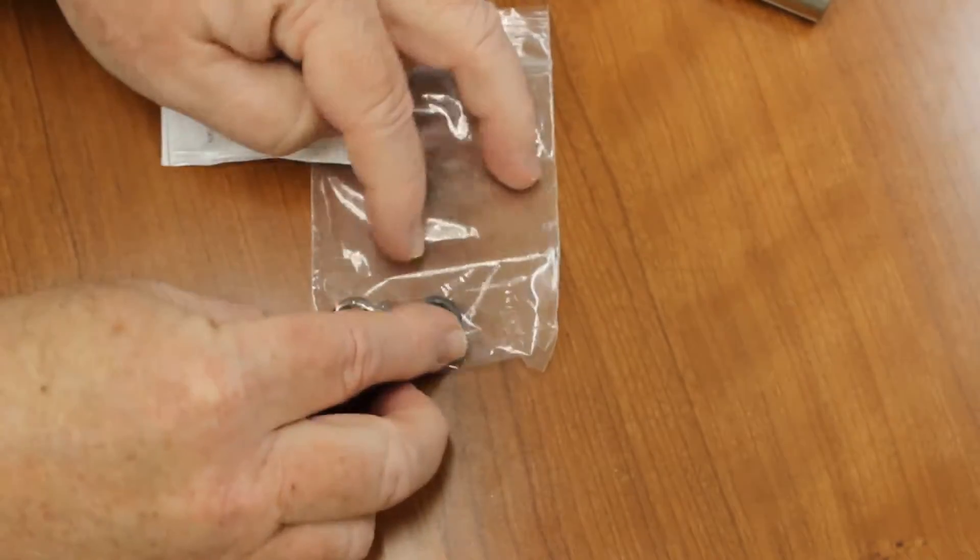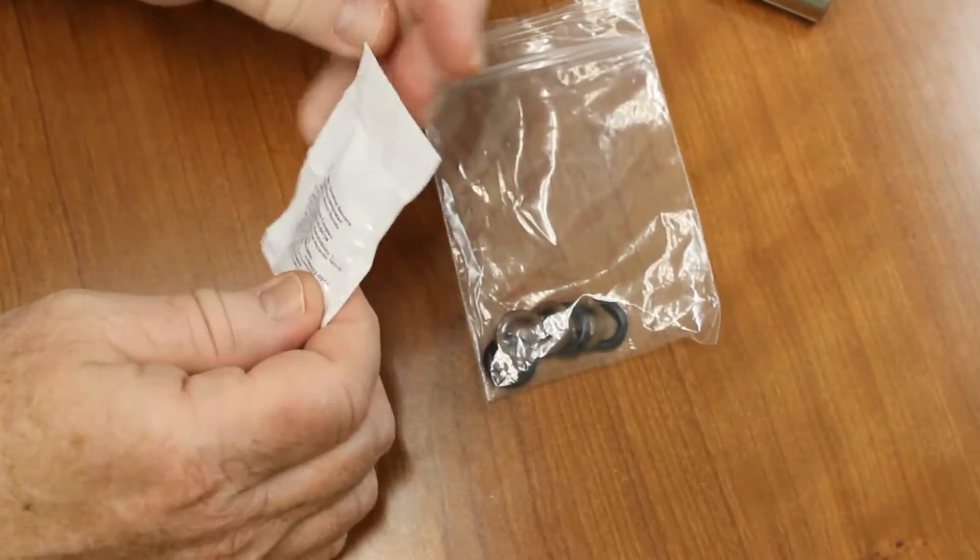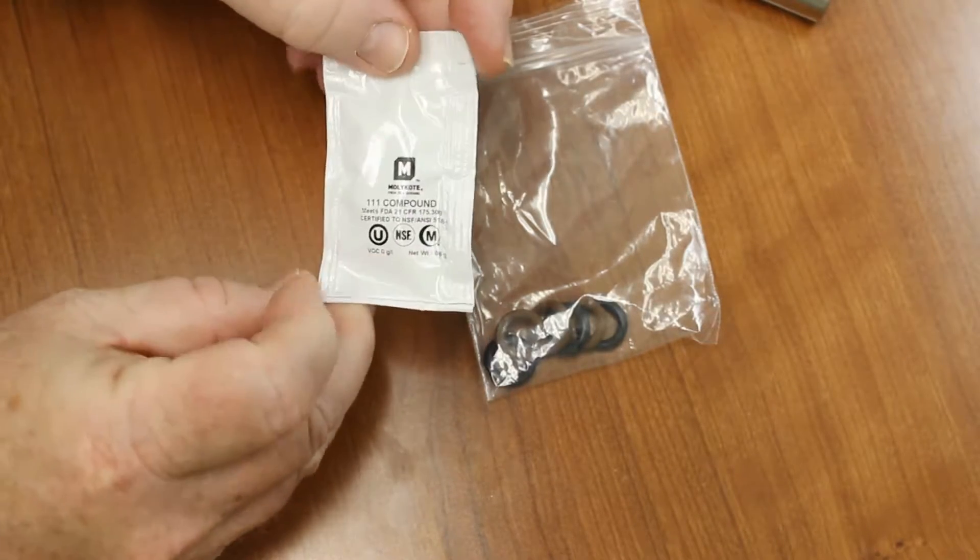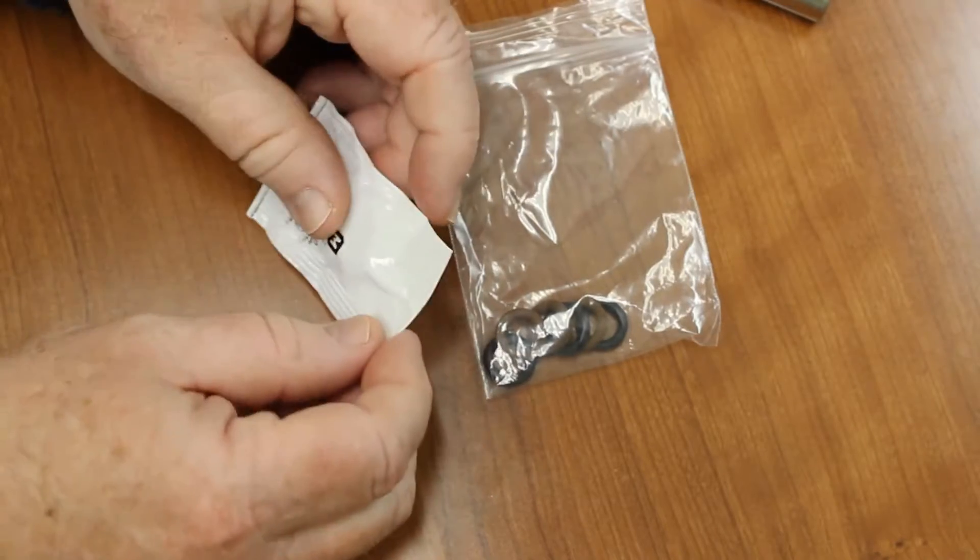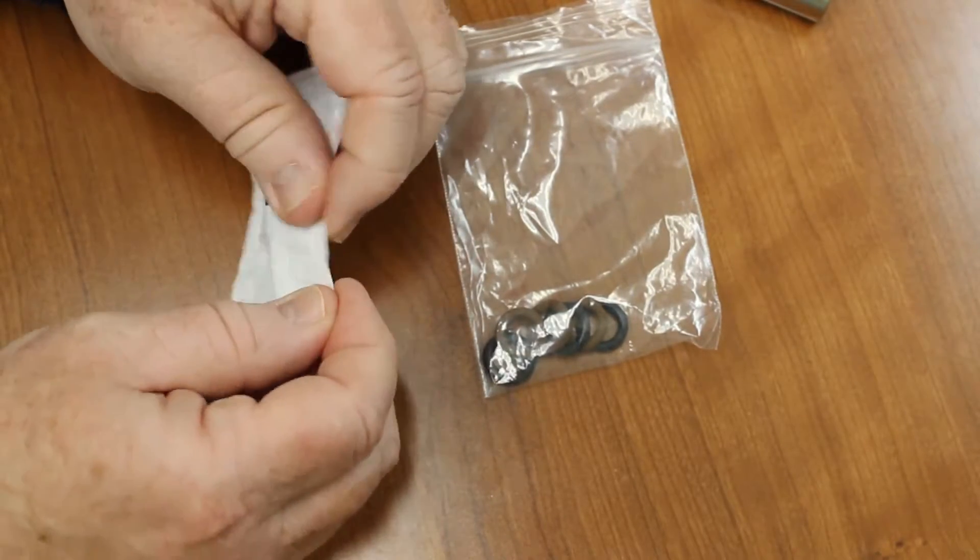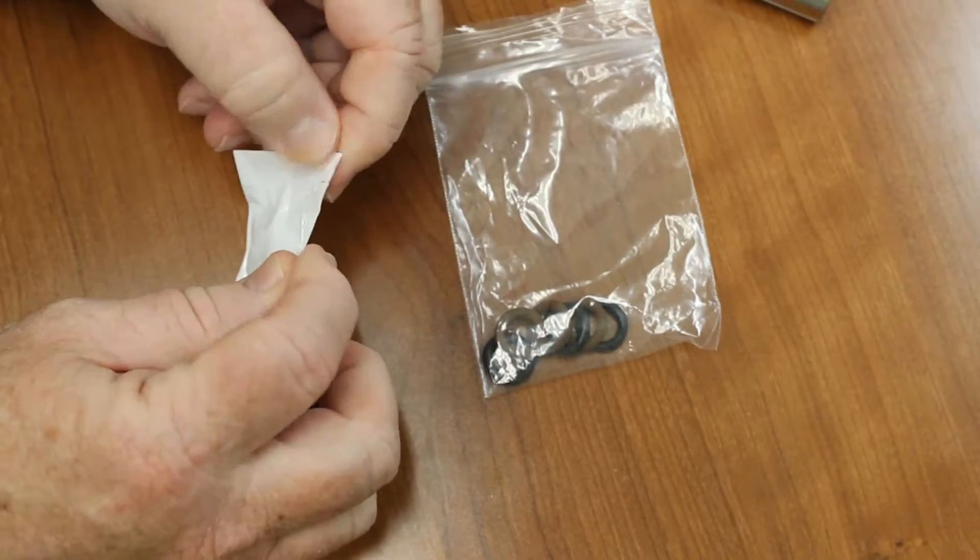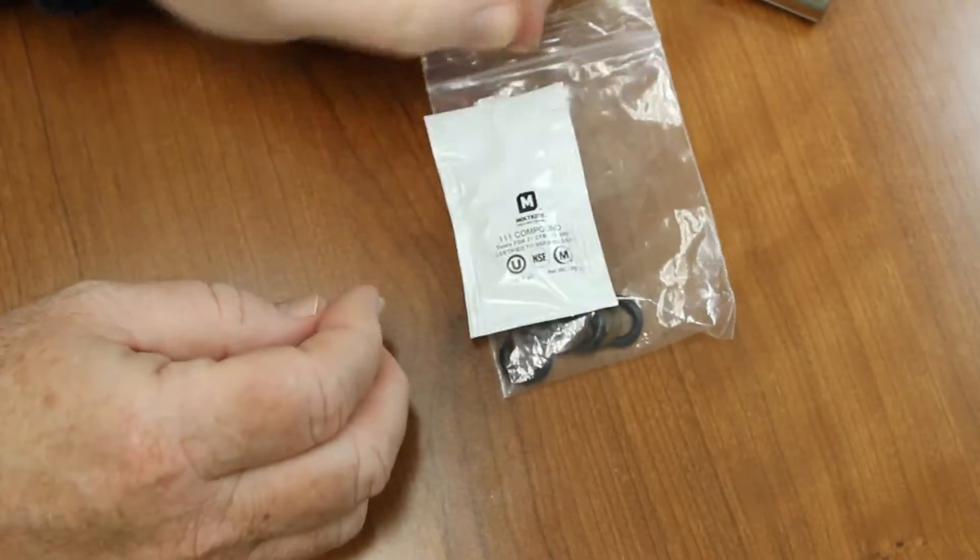You get three of each. And you also get some lubricant. We send this 111 compound. It's a silicone-based lubricant. And I want to show you how to maintain your logger O-rings.